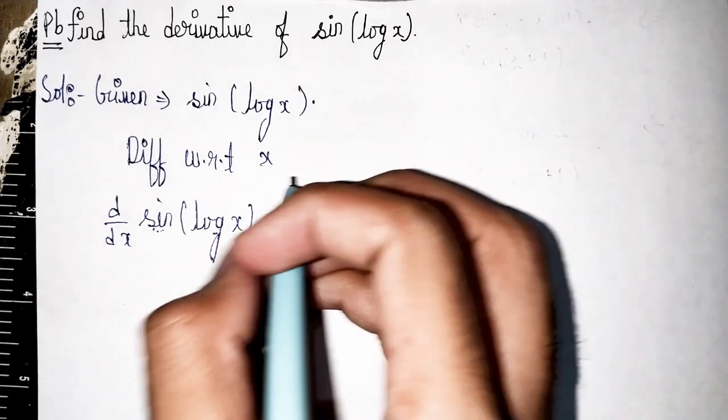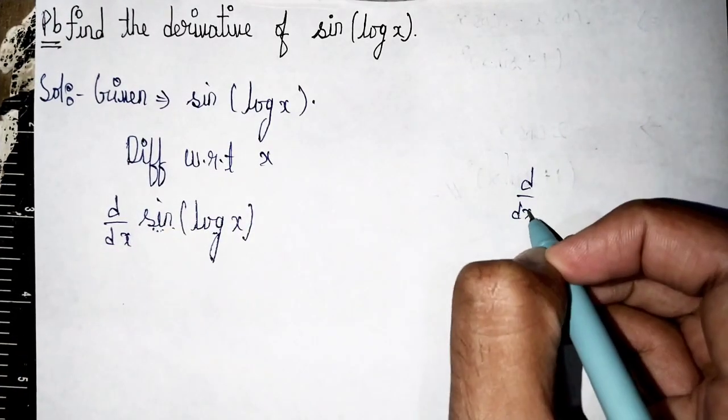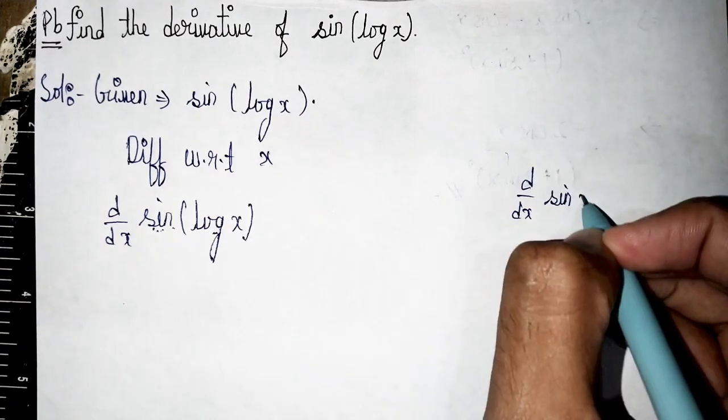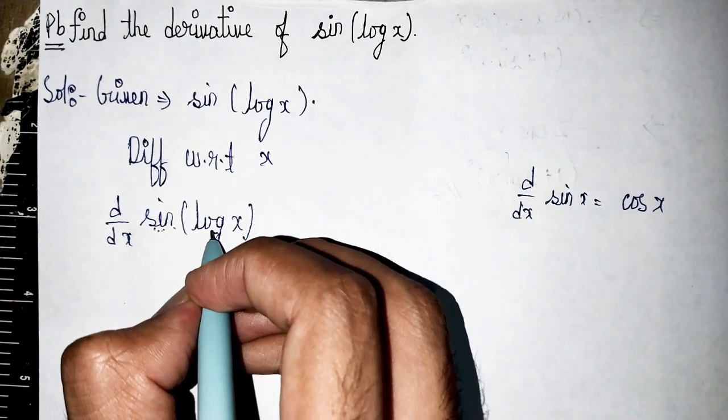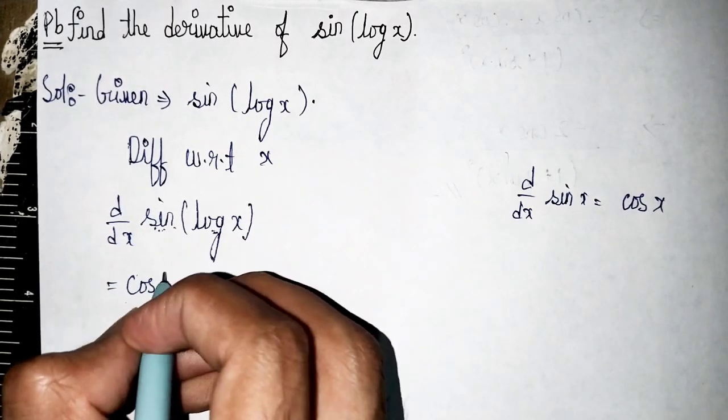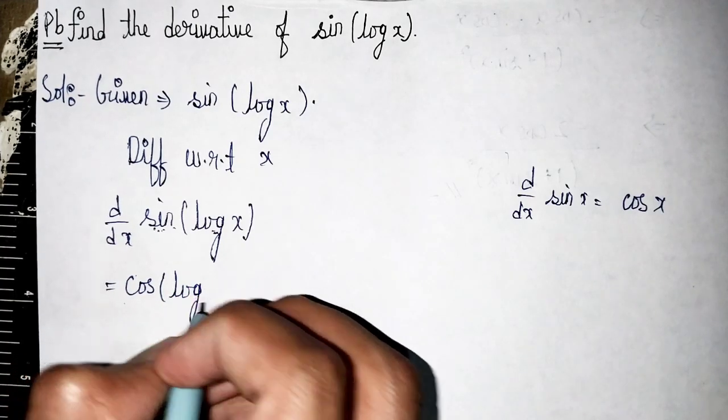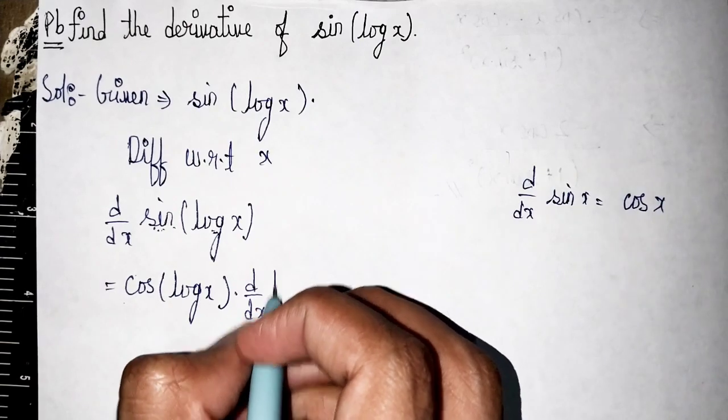Always remember: d/dx of sin x equals cos x. But here, x is replaced with log x, so it becomes cos(log x) times d/dx of log x, using the chain rule.